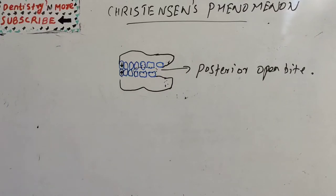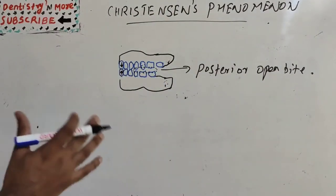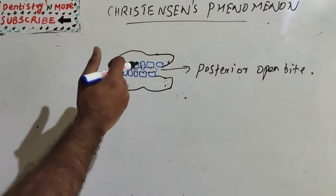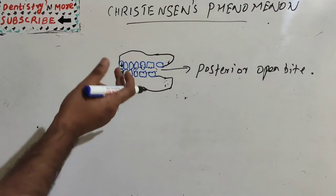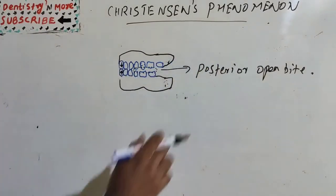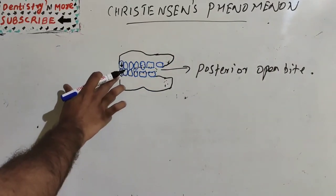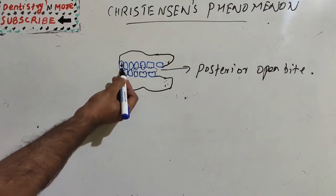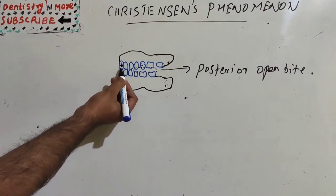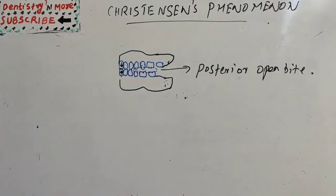Welcome back to another session in dentistry. Today's topic in prosthodontics is Christensen's Phenomenon. It is a gap occurring in natural dentition or between opposing posterior flat occlusal rims when the mandible is protruded — creating a posterior open bite when the anterior teeth come into edge-to-edge contact.